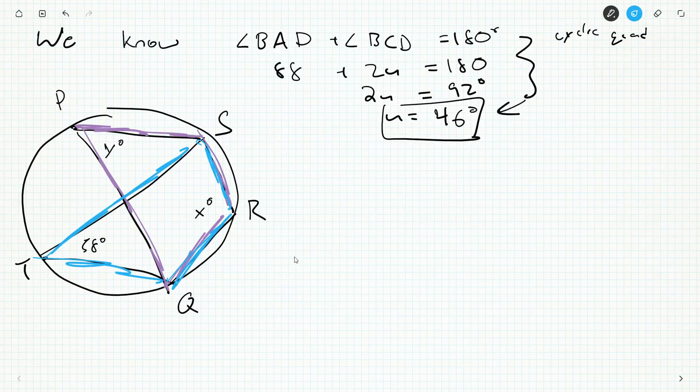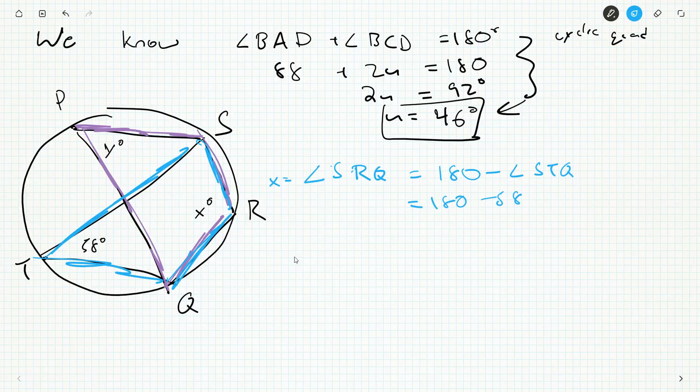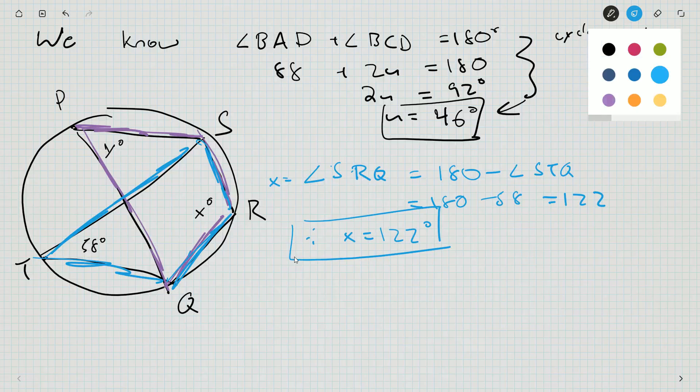We know 58 here, x here, and y here. Let's talk about the blue quadrilateral first. So x equals angle SRQ which is opposite to angle STQ, so it's 180 minus 58. 180 minus 60 is 120 plus 2, so it should be 122. Therefore x is 122 degrees.